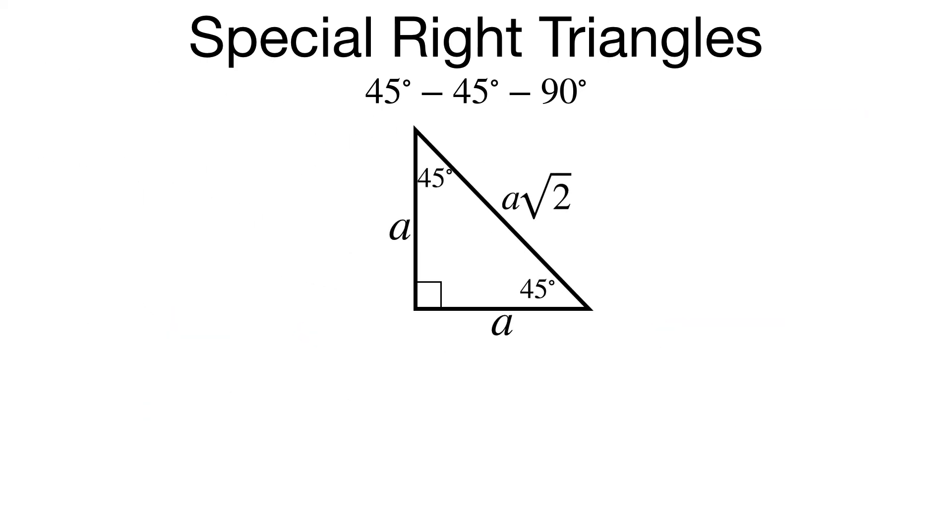And that's basically all there is to it. So if you know the leg length, the other leg will be a as well. It will be the same length. And the hypotenuse will be the leg length times the square root of 2.